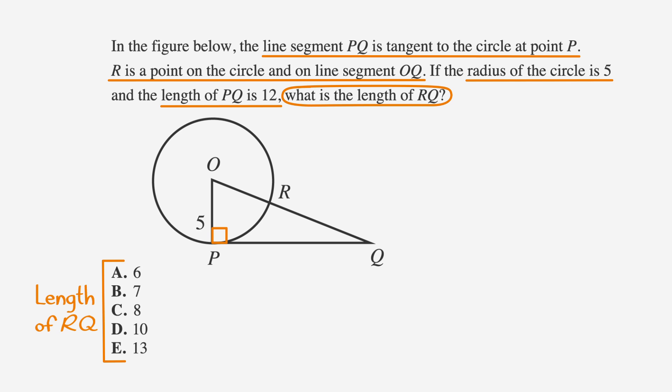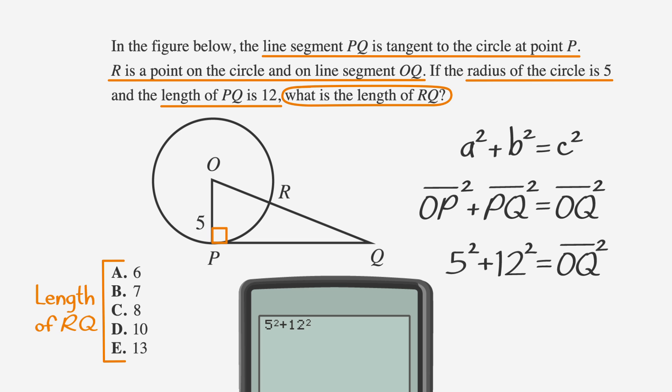So we know that OP squared plus PQ squared equals OQ squared, or 5 squared plus 12 squared equals OQ squared. If we plug 5 squared plus 12 squared into our calculator, we find that OQ squared equals 169, and we can take the square root of that to find that OQ is 13.